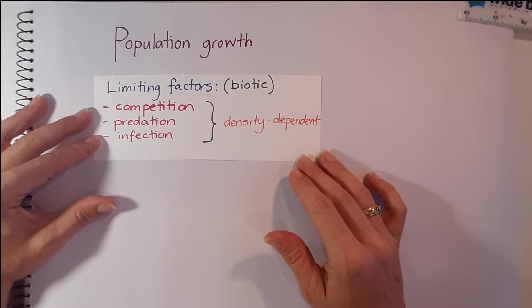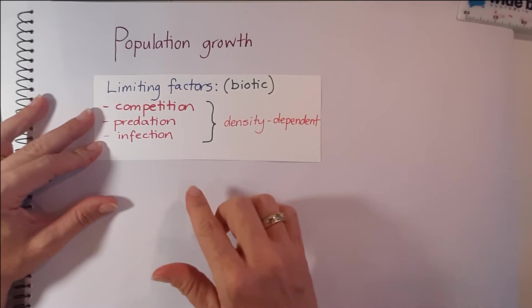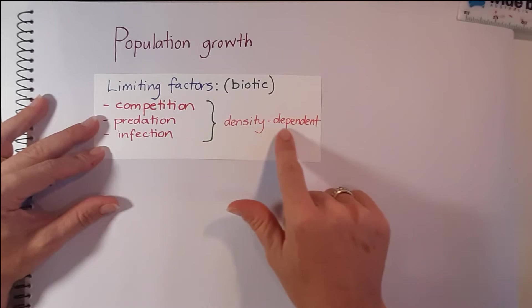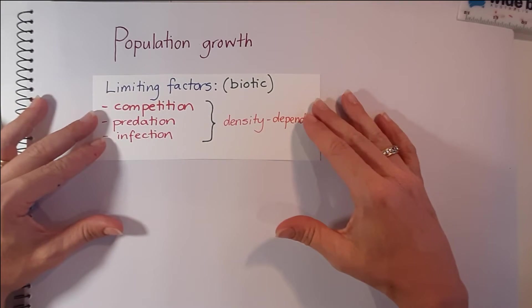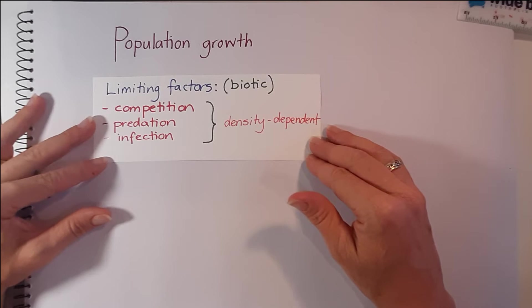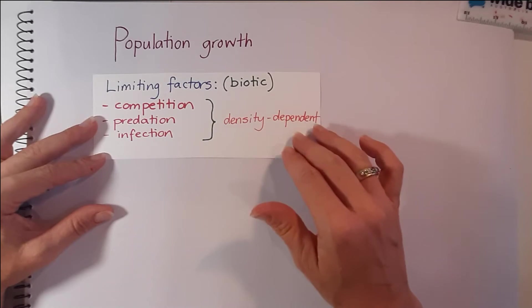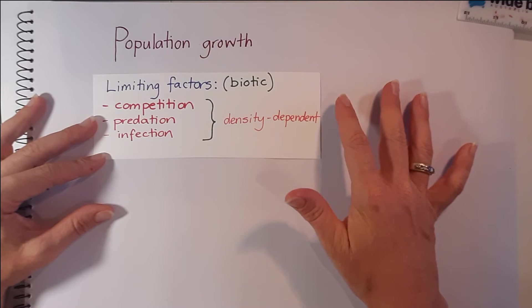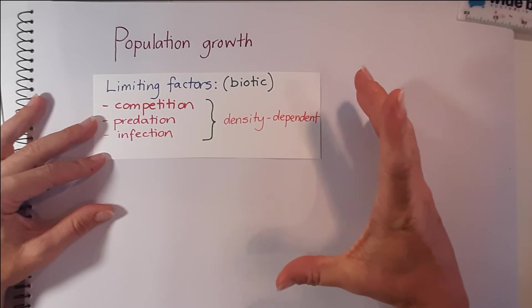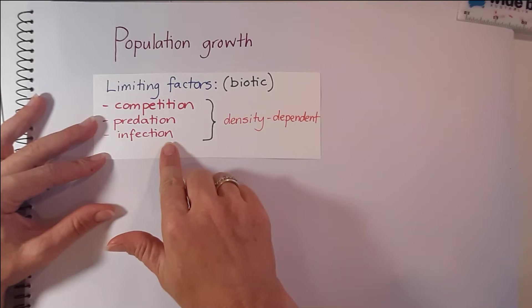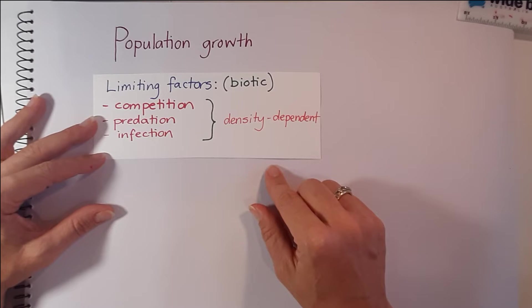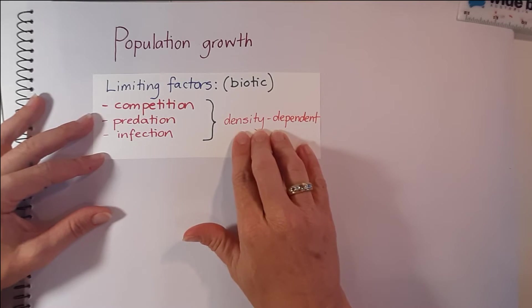A third limiting factor is infection. So in all of these cases, these are density dependent factors, so the higher the density of individuals that are living in a space, so as density increases, the number of individuals living in a certain area increases. If you imagine humans living in a city, compared to humans living in a more rural area, and if we talk about infection, the individuals who are living in a more crowded environment are more likely to succumb to any particular infection because it's much easier for it to be transmitted from individual to individual when they are in a crowded or high density environment.